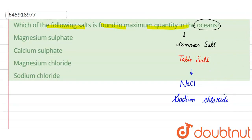So now, moving to the options here. First is magnesium sulfate, second is calcium sulfate, third is magnesium chloride, and D is sodium chloride. So in maximum quantity, that would be sodium chloride, option D.